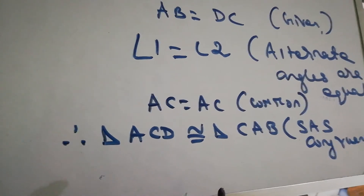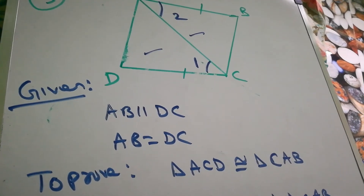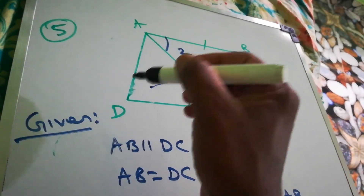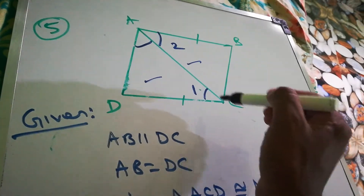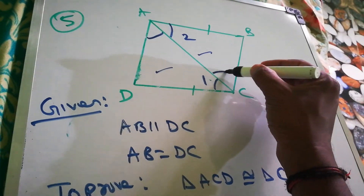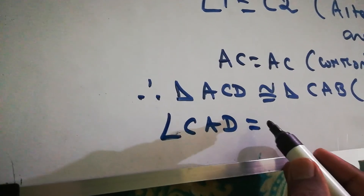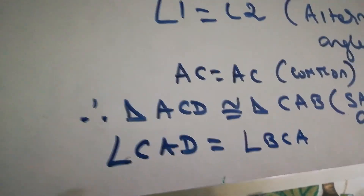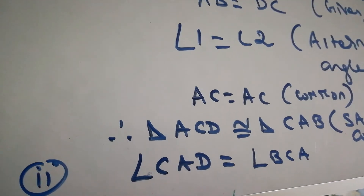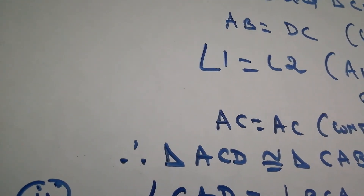Since triangle ACD and CAB are congruent, we consider which angle equals CAD. Angle CAD equals angle BCA because these two are alternate angles.